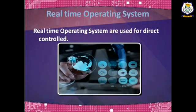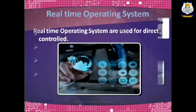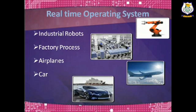The real-time operating system. Real-time operating systems are used for direct control over electromechanical equipment such as industrial robots, factory processes, airplanes, and cars. They monitor external events and react instantly.